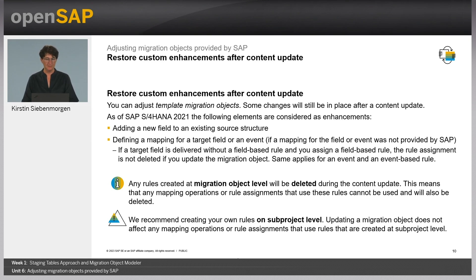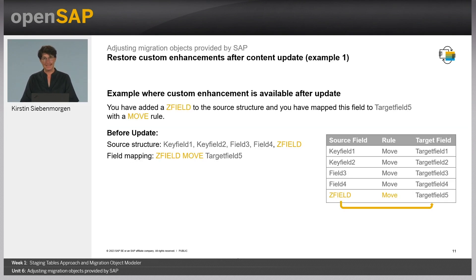Some changes will be restored if a migration object was adjusted and an update from SAP is available. As of SAP S/4HANA 2021, adding a field to an existing source structure will be restored. The same applies if you assign a field-based rule to a target field or an event which has not been supplied by a rule from SAP yet. Be aware that any rule created at migration object level will be deleted. We therefore recommend creating your own rules on SAP project level — they can be used by all migration objects in the project, and if a migration object is updated, the rule assignments are not affected. With a future release, we will also restore newly created structures. To better understand the restore of custom enhancements, I have an example.